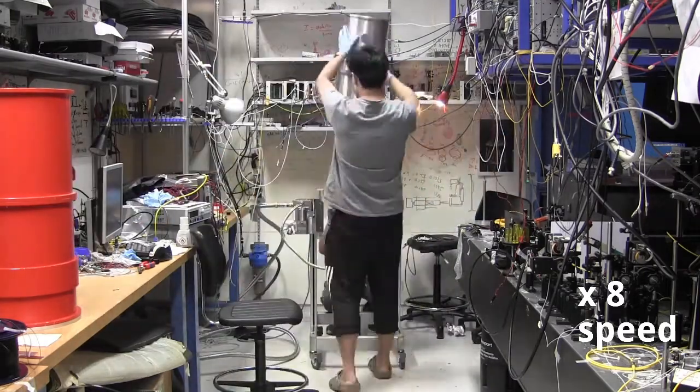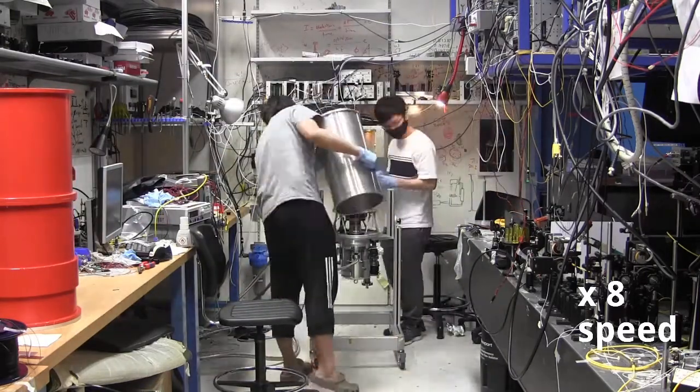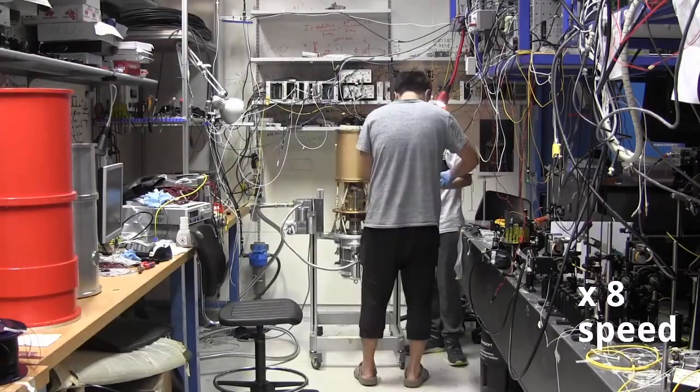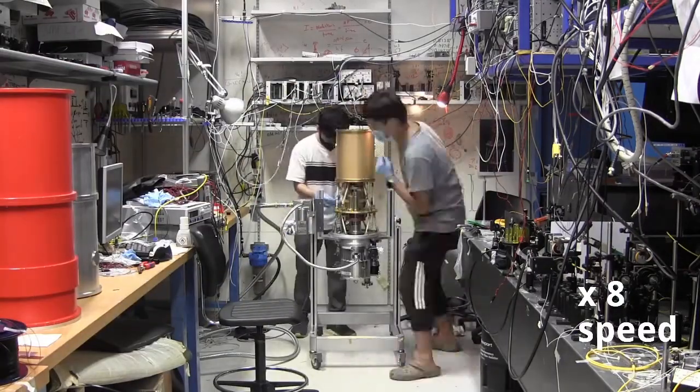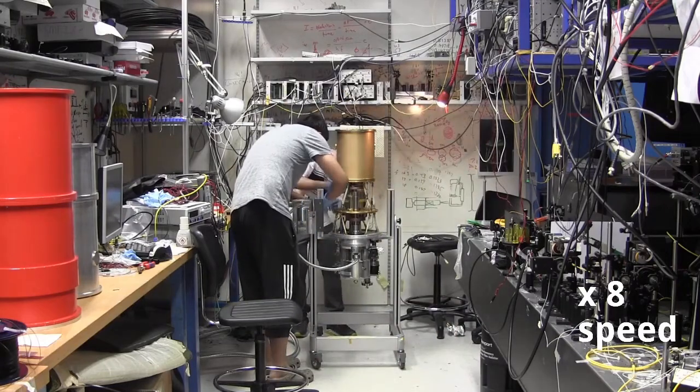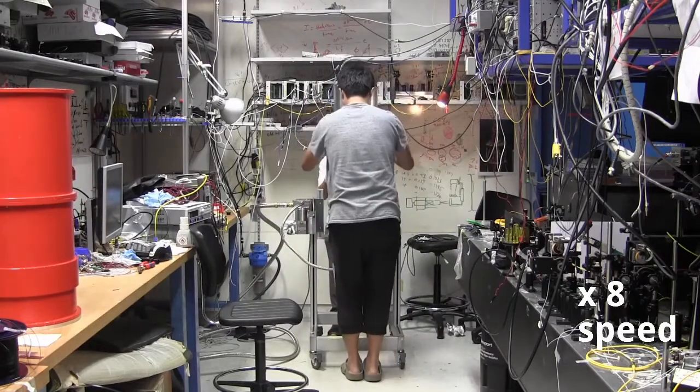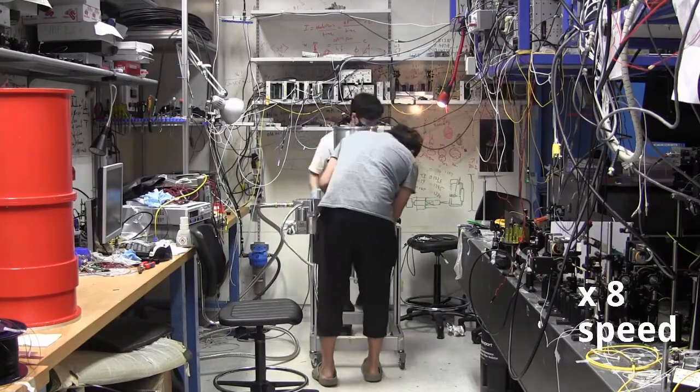This is screwed together carefully, and now this aluminum can that comes on top is supposed to block out even more radiation. The golden part is at 4 Kelvin and the aluminum part will be at about 50 Kelvin.